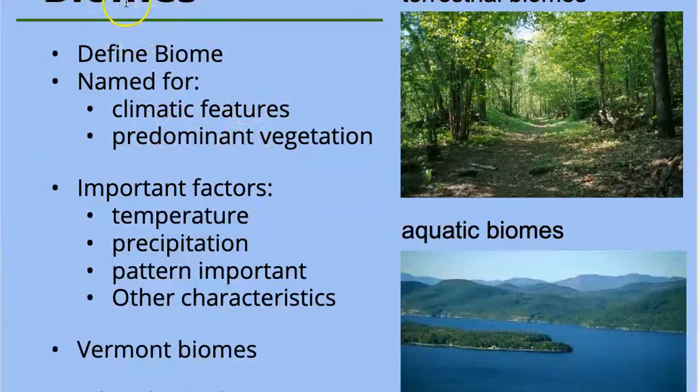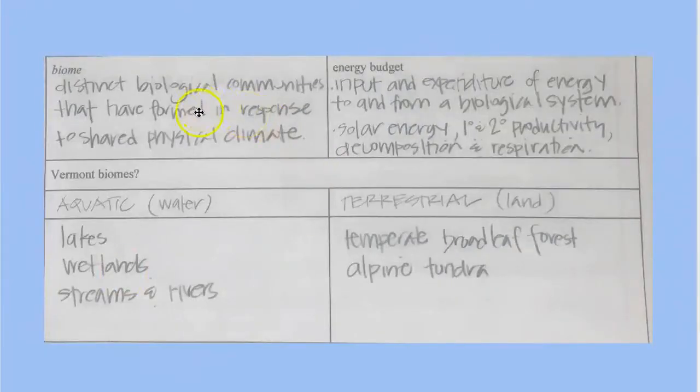And the term that we use to refer to those collections of selectors are biomes. So it just refers to these distinct biological communities, and they have a shared physical climate and also vegetation. You should include that in your definition there.